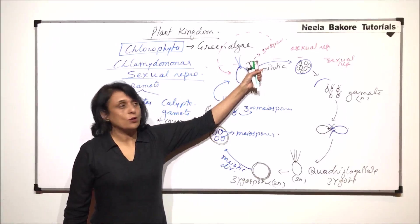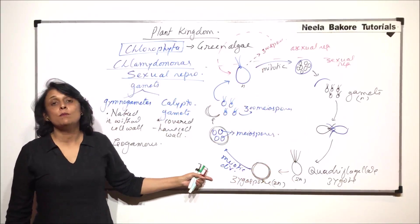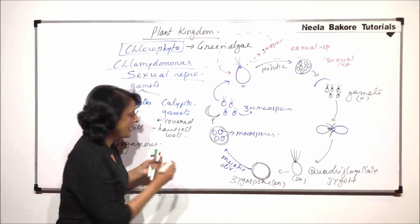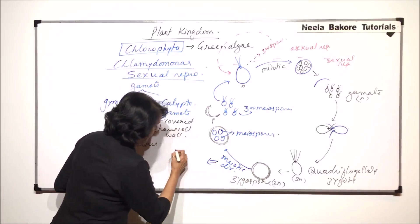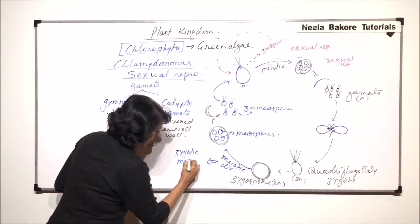Here, the division is mitotic. Here also it is mitotic. The only place where meiosis takes place is in the zygospore. And that is why this meiosis is also known as zygotic meiosis.